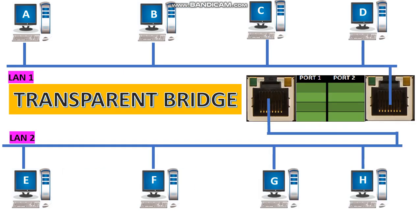Transparent bridge is also called a learning bridge. In the transparent bridge, there is no need for operators to enter details into the table. The bridge builds its table on its own while performing bridging operations — that is, while transferring frames from one station to another. It builds its table based on the source address of the frame. I will explain this with the help of an example.